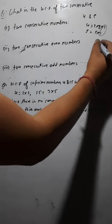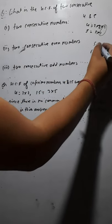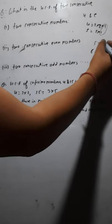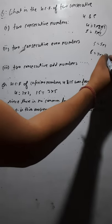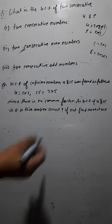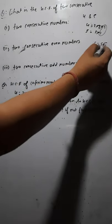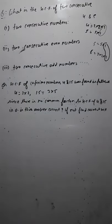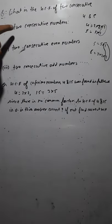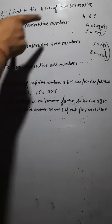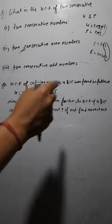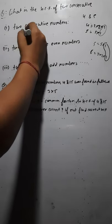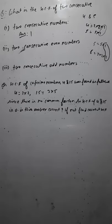Let's take five and six — both are consecutive numbers. Factors of five: five × one = five. Factors of six: two × three = six, one × six = six. What is the common factor again? The common factor is one. So always you find one. If you take two consecutive numbers, their HCF will always be one. So the answer is one — HCF of two consecutive numbers is one.